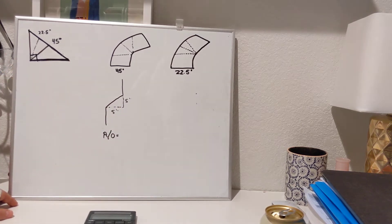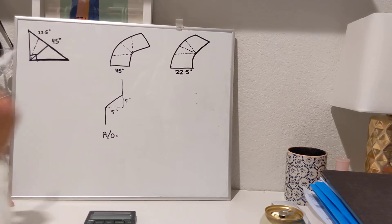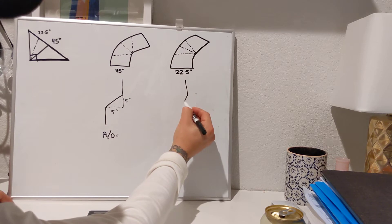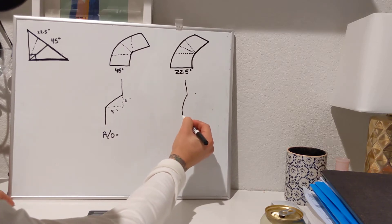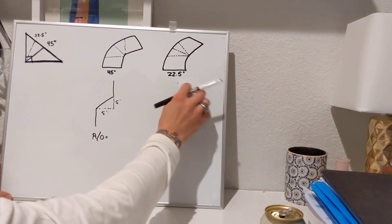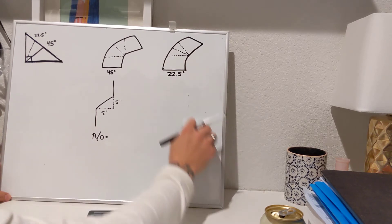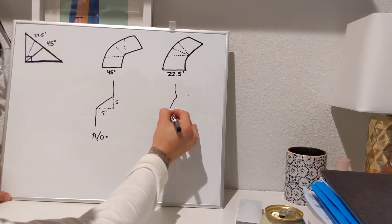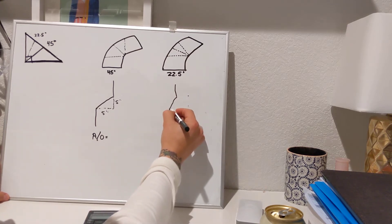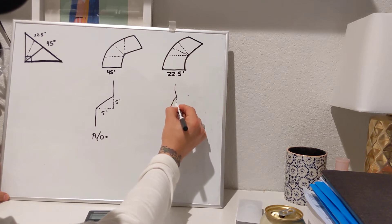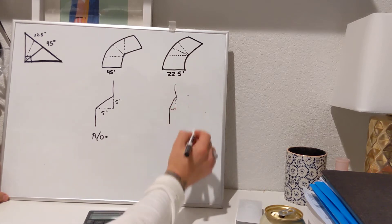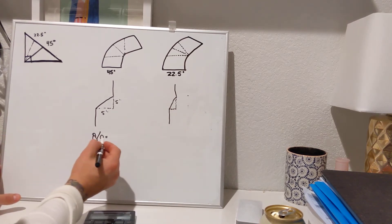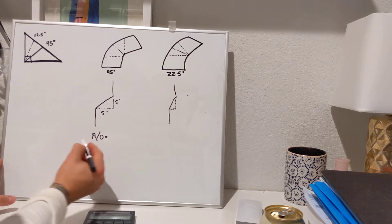So the same principle doesn't apply to a 22-degree offset. A 22-degree offset, as you can tell, is going to be a lot more sharp. This angle is going to be a lot shorter than the actual advance. So your offset is going to be shorter than your advance. The same principle of your advance and your offset being the same does not apply. You have two different formulas.